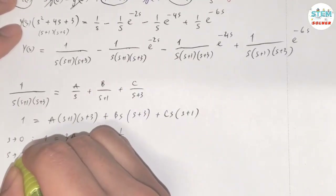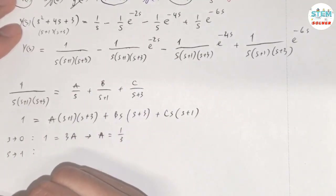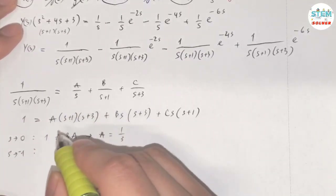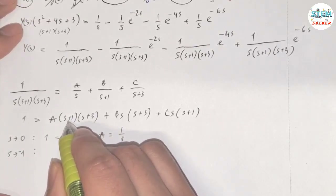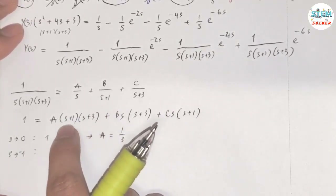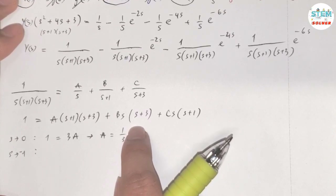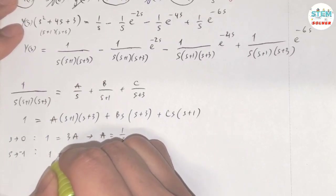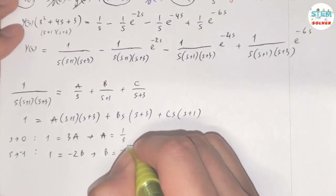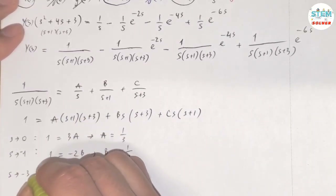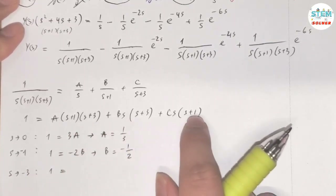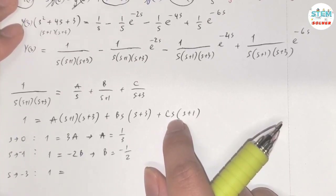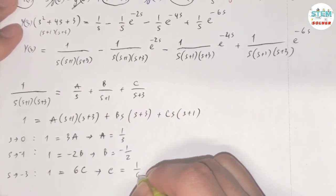Now do the same for the rest. Let S approach -1: the A and C terms are eliminated, so 1 = B(-1)(2) = -2B, giving B = -1/2. Let S approach -3: the A and B terms are eliminated, so 1 = C(-2)(-3+1) = C(-2)(-2) ... that gives C(-3+1)(-3) = C(-2)(-3) = 6C, so C = 1/6.